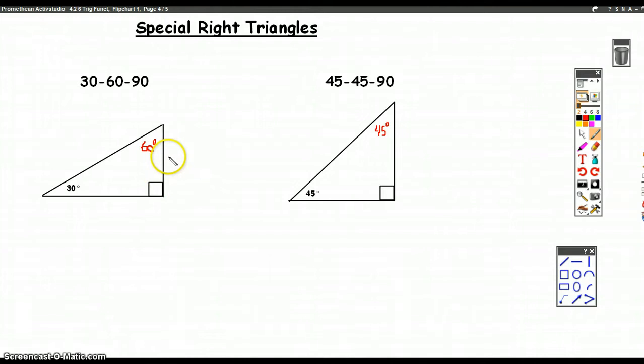Well, opposite the 30-degree angle, whatever that was, let's call it X, the hypotenuse was always double that in a 30-60-90 triangle. And this side opposite the 60-degree angle was always that small side times root 3.